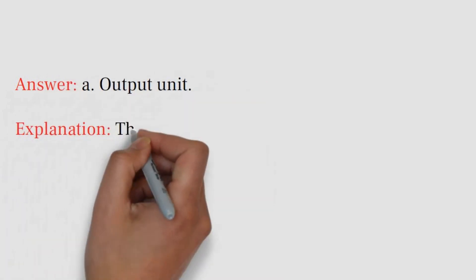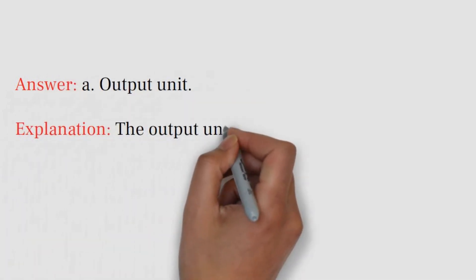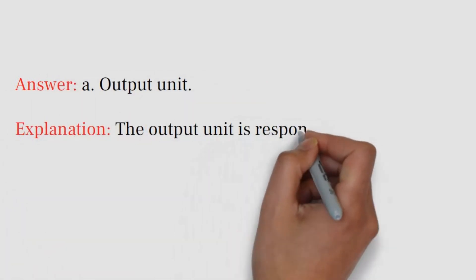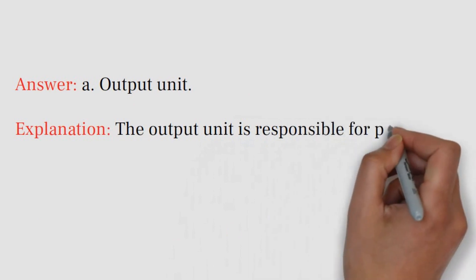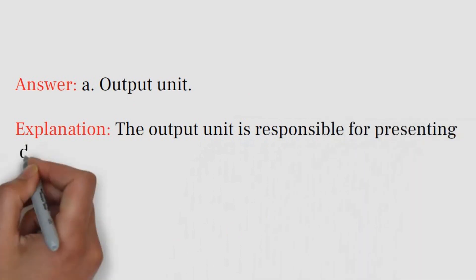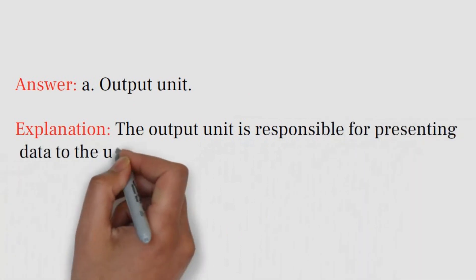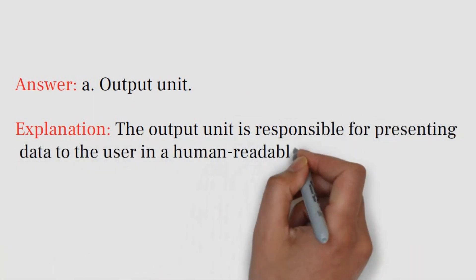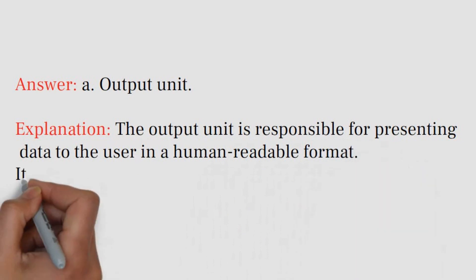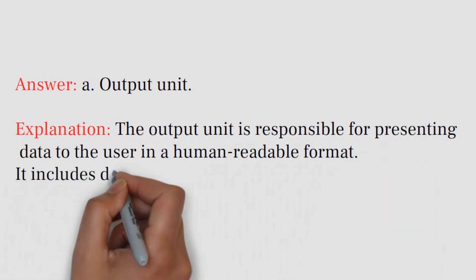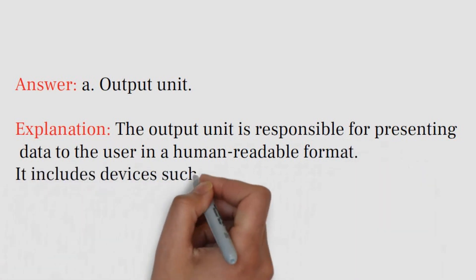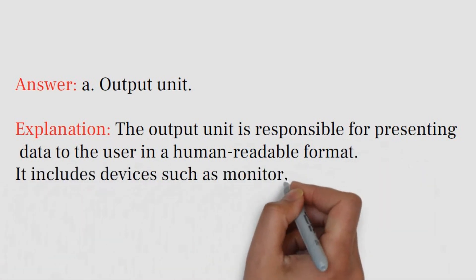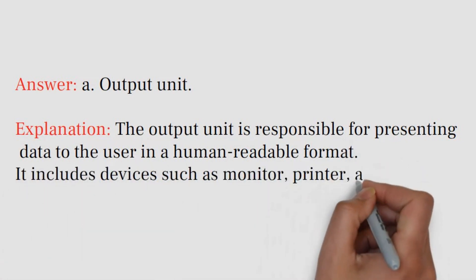Answer: A. Output unit. Explanation: The output unit is responsible for presenting data to the user in a human-readable format. It includes devices such as monitor, printer, and speakers.